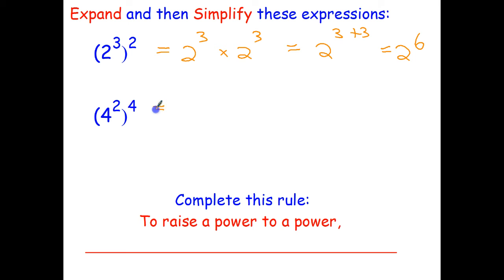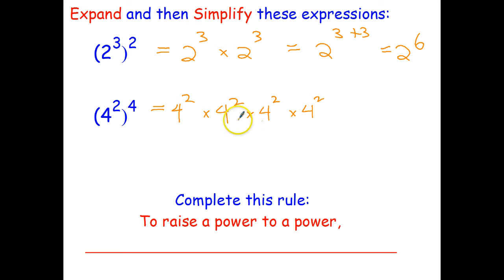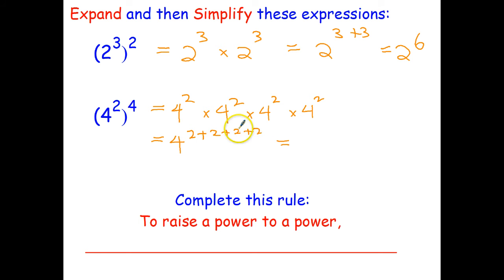We'll do this one the long way too. Anything raised to the 4th power means you multiply 4 of those terms together. So 4 squared to the power of 4 gives us four copies of 4 squared. We add the indices: 2 plus 2 plus 2 plus 2 is 8, so that simplifies to 4 to the power of 8.